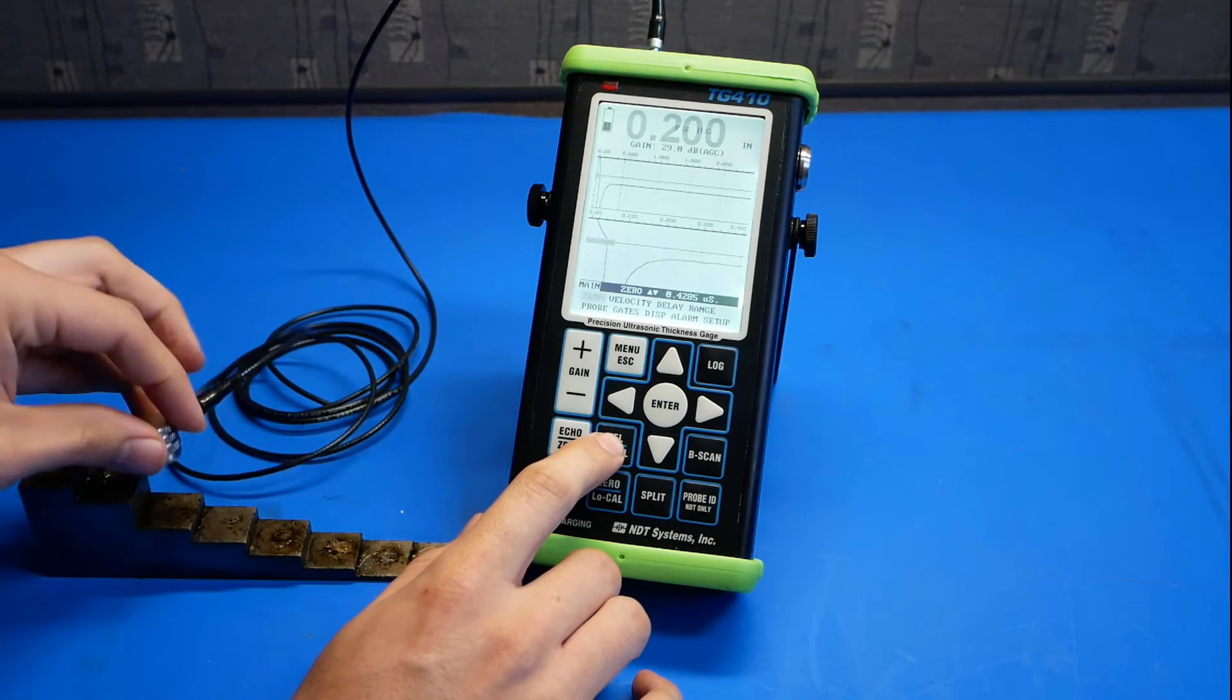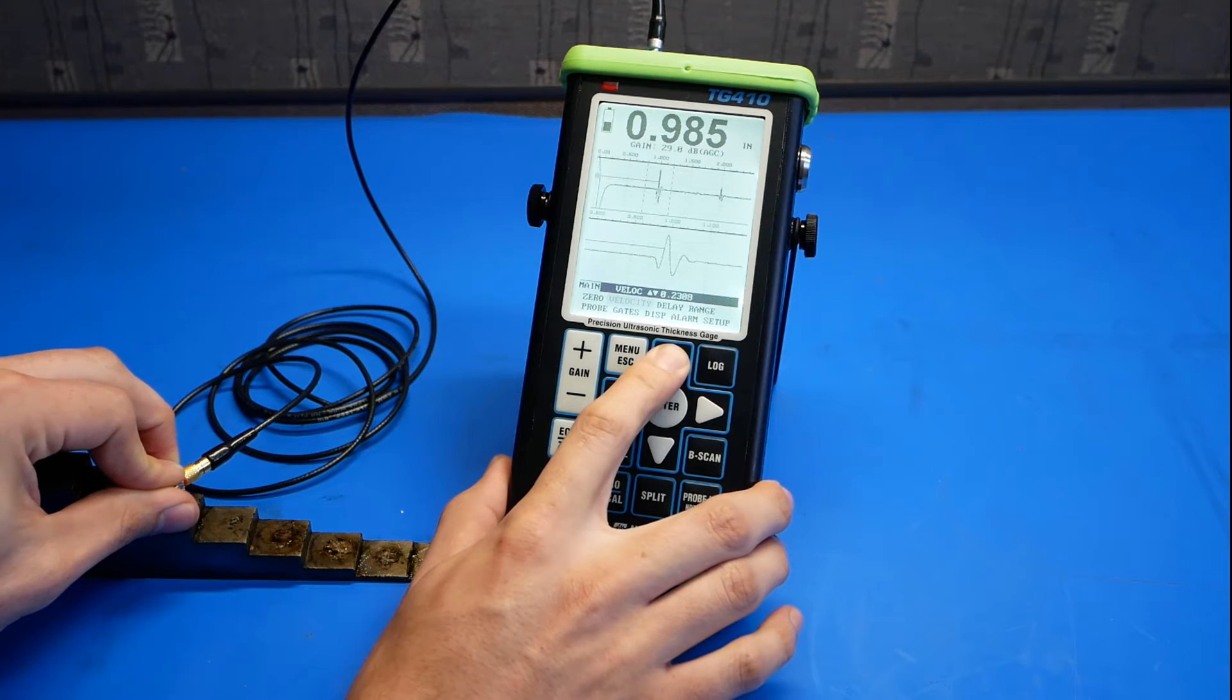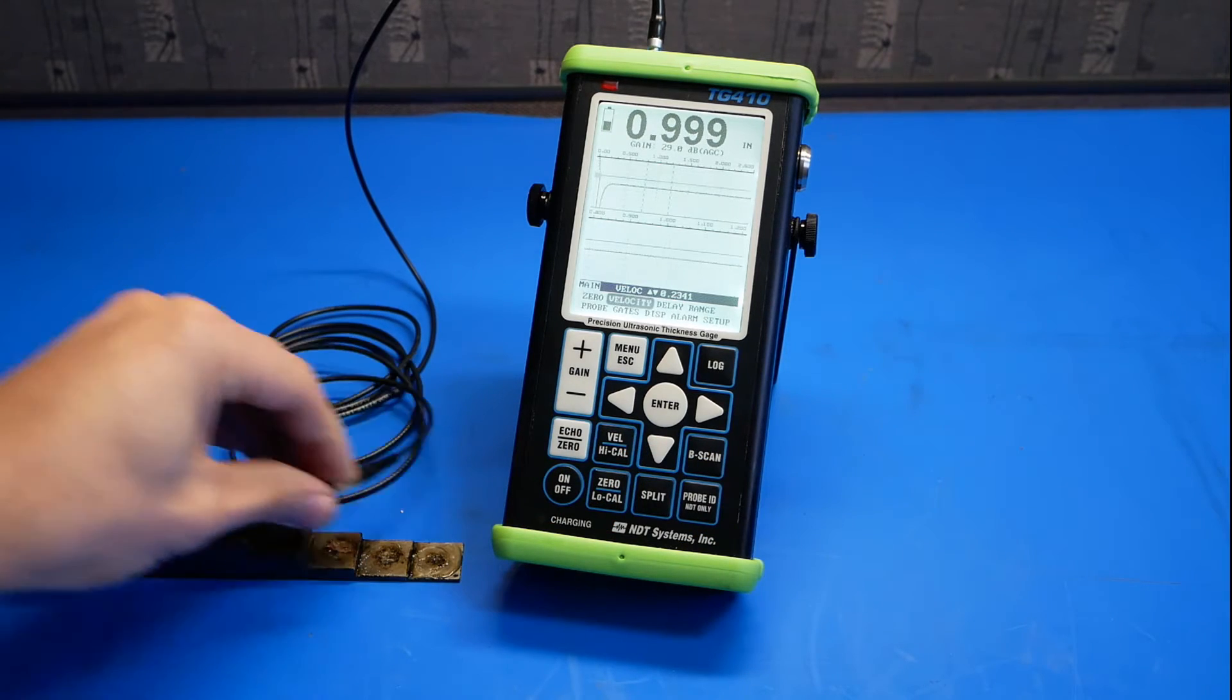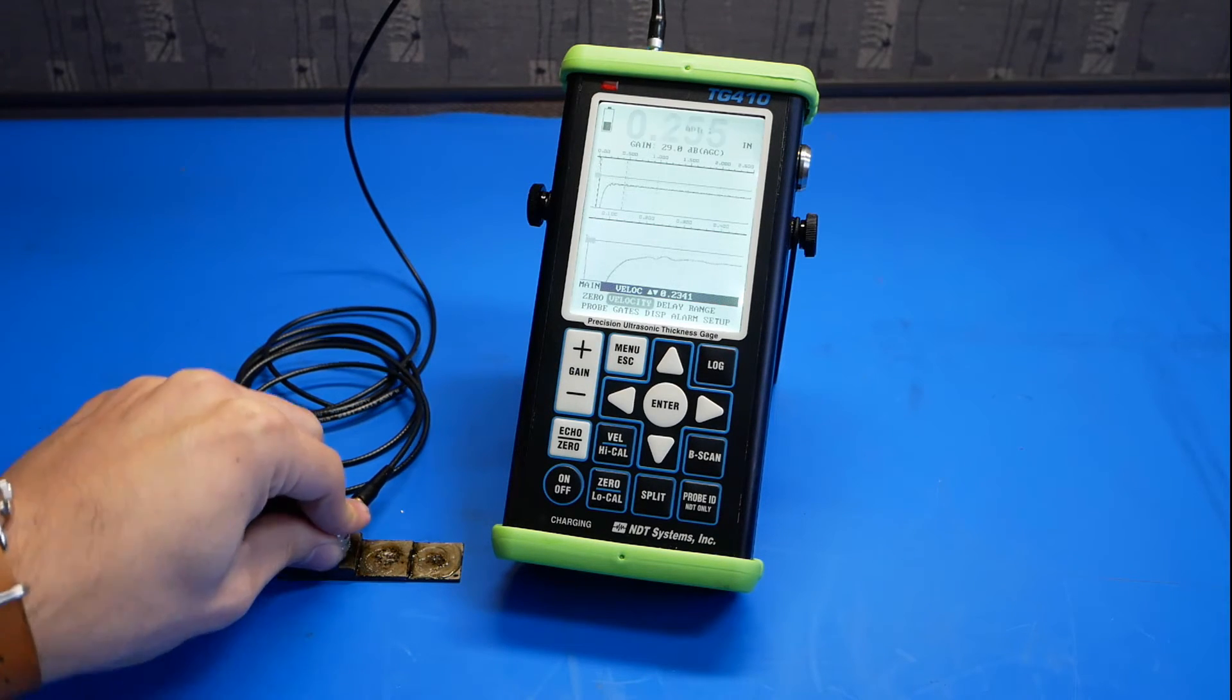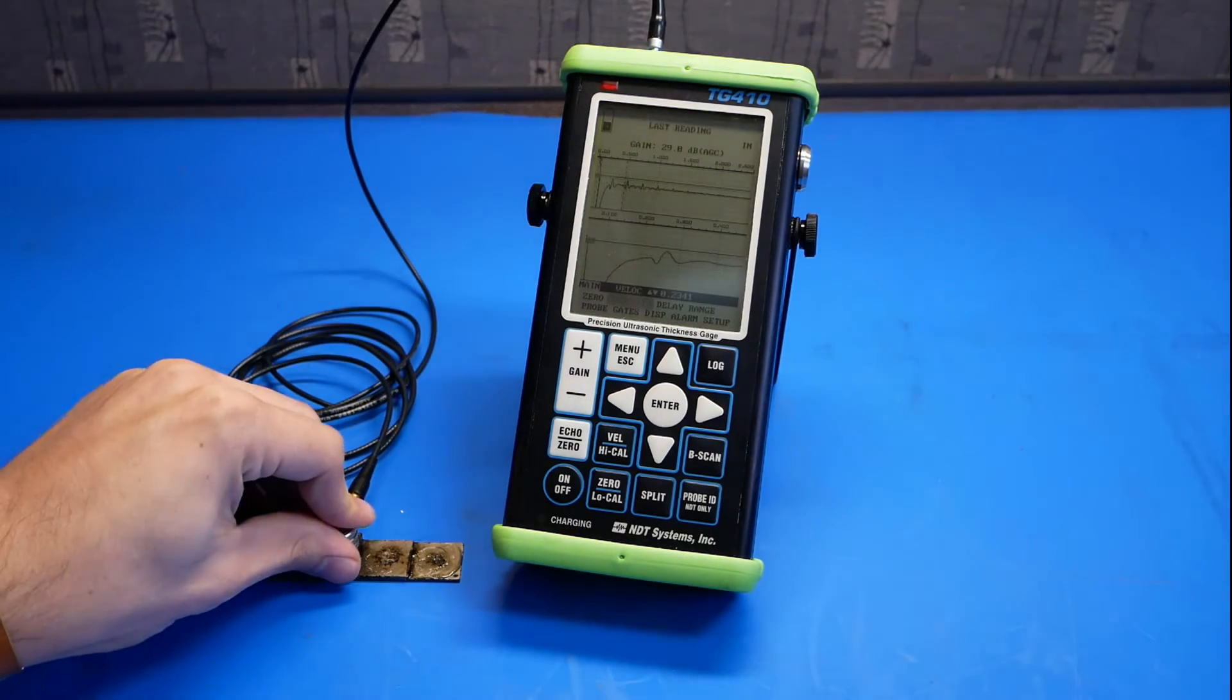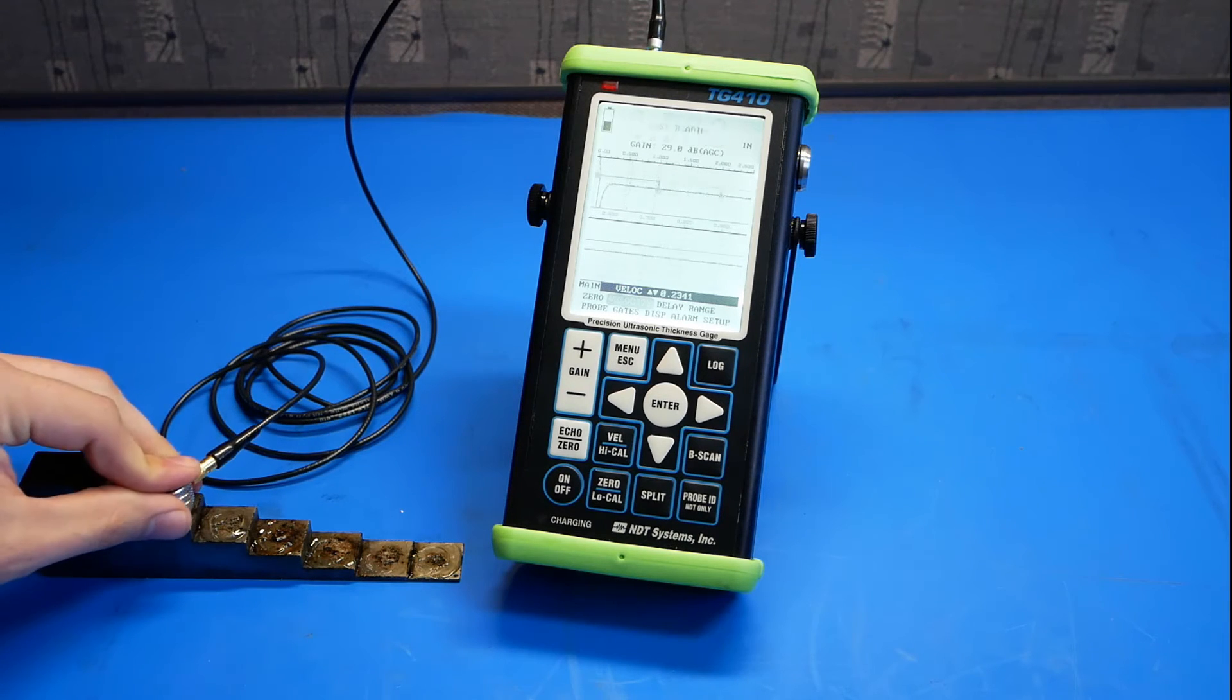Next, go to velocity high cal and couple to a region of high thickness, in this case 1 inch. And increase the velocity until we get our desired reading. Now, if we go and couple along various parts of the cal block, may need more couplet over time as it dissipates, we can see that all the readings are within tolerance.